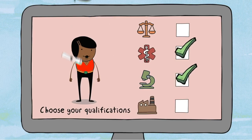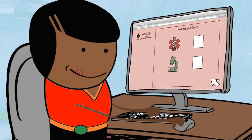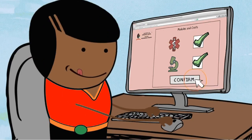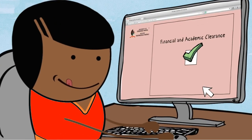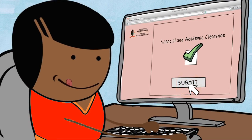You will need to choose modules for each semester. Once you've done this, confirm your chosen modules and the associated costs. If you have financial and academic clearance, you can confirm and submit your registration.